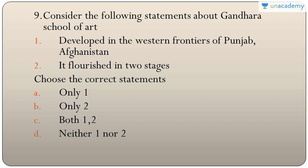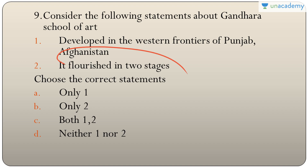Question nine: statements about the Gandhara school of art — it developed in the western frontiers of Punjab and Afghanistan, and flourished in two stages. Both statements are correct, so the answer is C — both one and two. In the first stage, bluish-grey stone was used, and in the later stage, mud and stucco were used.